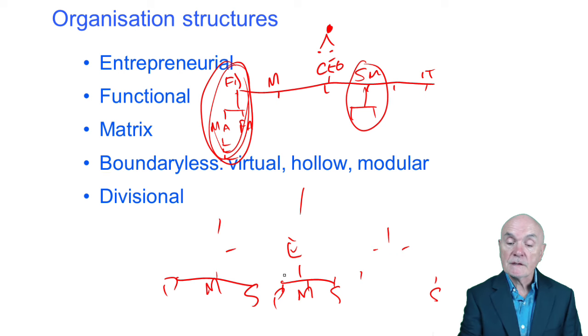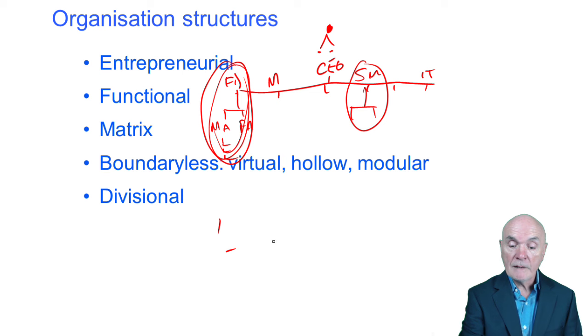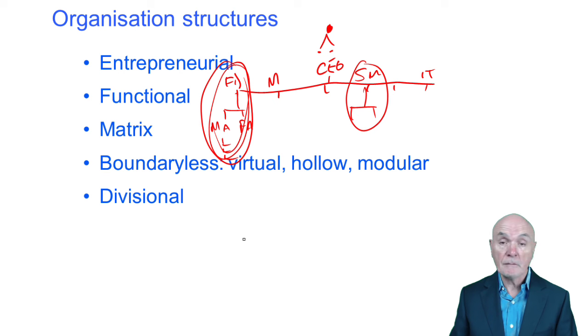You can also divide it up in terms of major product categories. So in the UK, we had a major chemical company and it made agricultural chemicals, basically fertilizers and it made paint. Now there's really hardly any overlap on those skills or on those customers. So they had their agrochemicals division and they had their paint division and they became specialists in that.